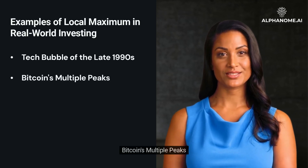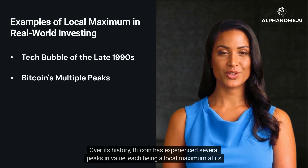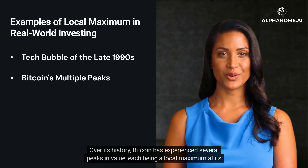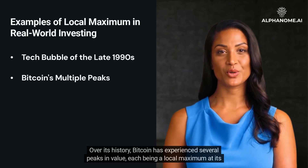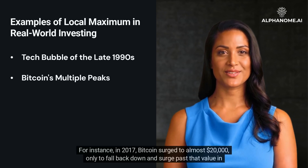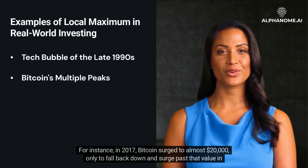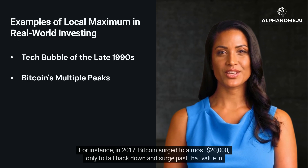Another example is Bitcoin's multiple peaks. Over its history, Bitcoin has experienced several peaks in value, each being a local maximum at its time. For instance, in 2017, Bitcoin surged to almost $20,000, only to fall back down and surge past that value in later years.